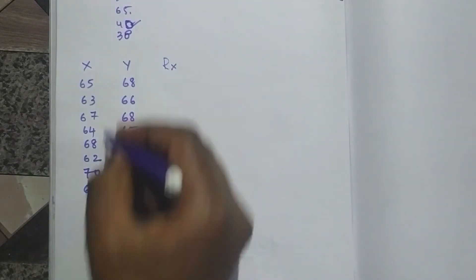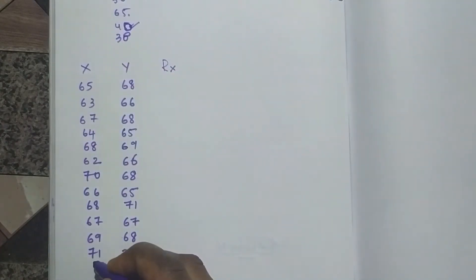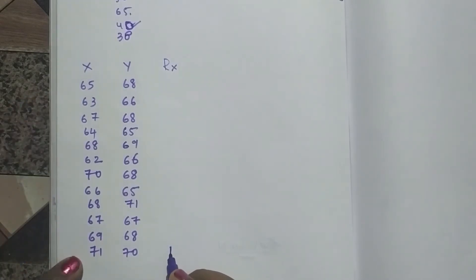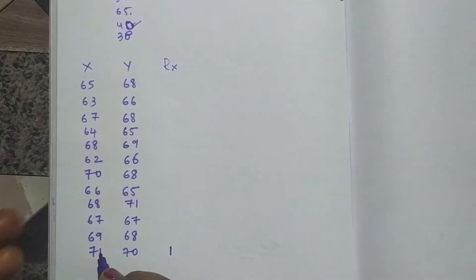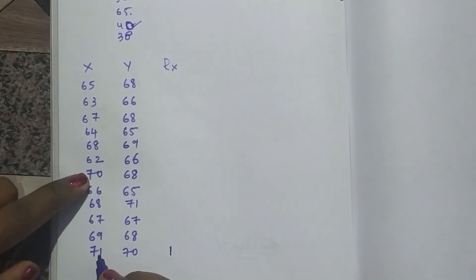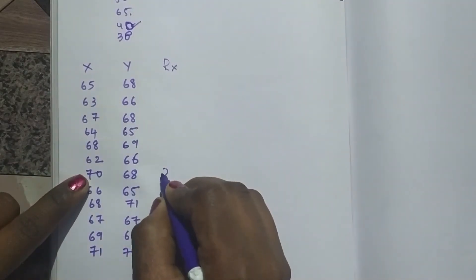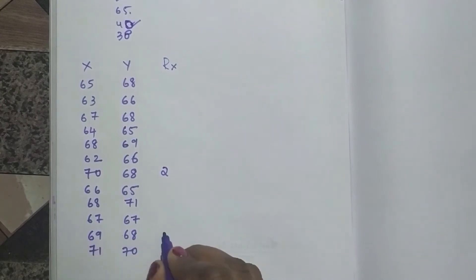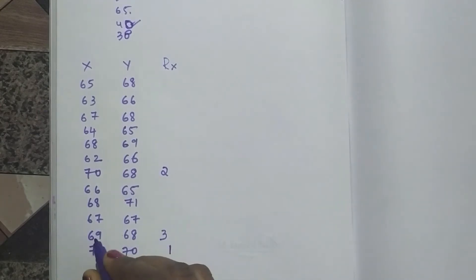First we have to find rank for x. To find rank for x, look at the x values and find which is the highest number. The highest number here is 71, so 71 gets the first rank. Since 71 is not repeated, it gets rank 1. After 71, the next highest is 70, so this gets second rank. Then 69 gets third rank.